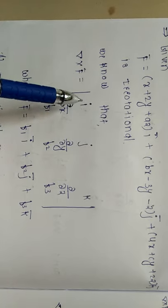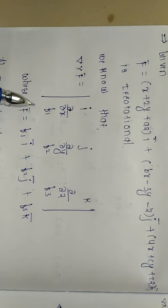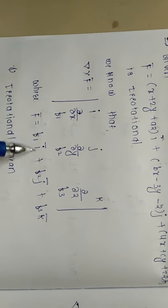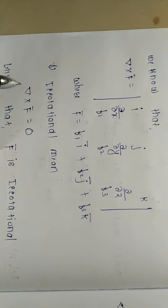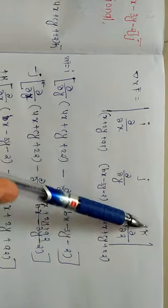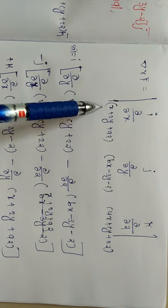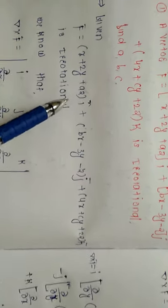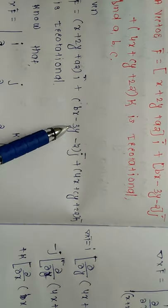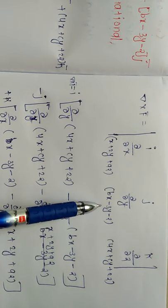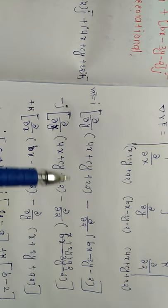To find del cross f-bar, set up the determinant with i, j, k in the first row; ∂/∂x, ∂/∂y, ∂/∂z in the second row; and the coefficients of i, j, k from the main function in the third row. So del cross f-bar equals this determinant. Solve it by the standard process: i times cross multiplication minus j times cross multiplication plus k times cross multiplication.